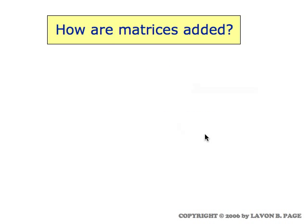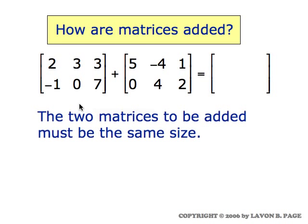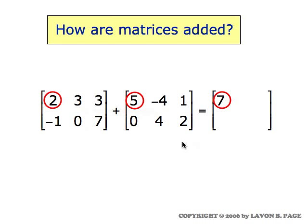The way that matrices are added is exactly what you would guess. Here we have two matrices. Notice that these matrices are the same size — each has two rows and three columns — and that's a cardinal rule. If you're going to add matrices, the matrices have to be the same size, that is the same number of rows and the same number of columns. The way they're added is simply to grab the numbers from each matrix that are in the corresponding spot.